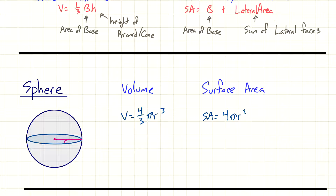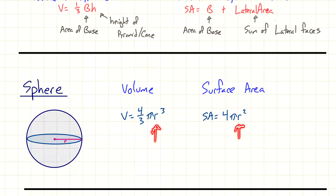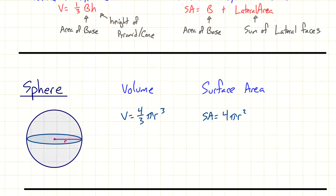The only thing that matters is the radius. This is probably one of the easiest shapes to find volume and surface area of because the only value you need is the radius. Volume is four-thirds pi r cubed — pay attention to the exponent because it has a huge impact on the answer. Surface area is four pi r squared — a different exponent. Unlike other surface areas where we had to add a base plus lateral area, this is already simplified into one formula.